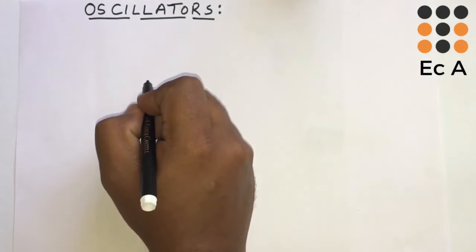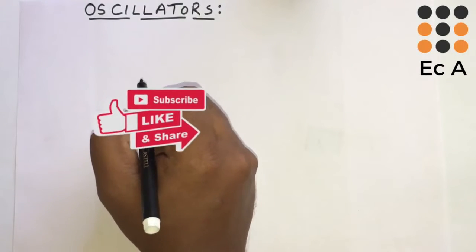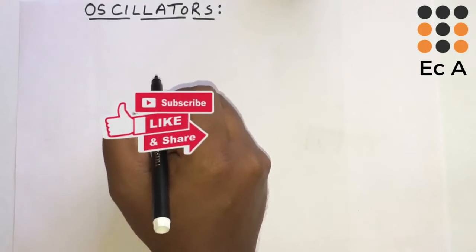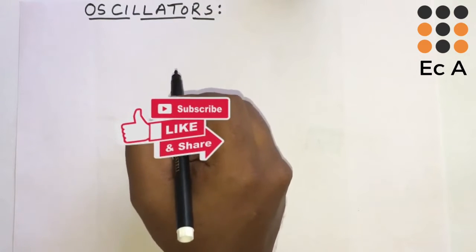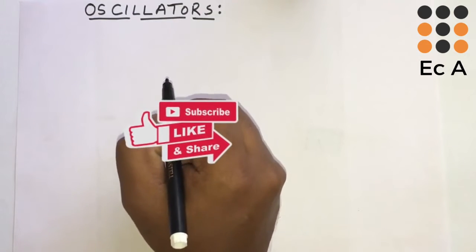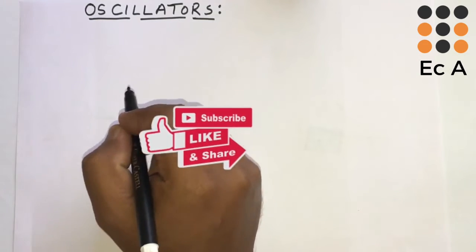Hello friends, welcome to EC Academy. In this lecture, we will understand what is an oscillator and we will understand the Barkhausen criteria.